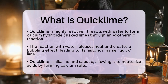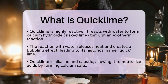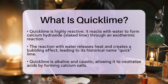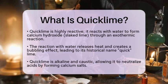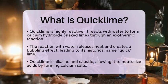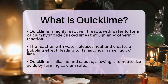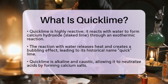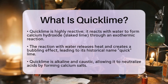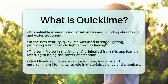QuickLime is alkaline and caustic, meaning it can neutralize acids by forming calcium salts. This property makes it valuable in various industrial processes. For instance, in steelmaking, QuickLime helps remove impurities from molten iron by forming slag. It is also used to treat drinking water by increasing alkalinity and eliminating harmful microorganisms.